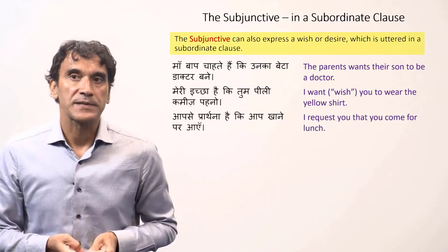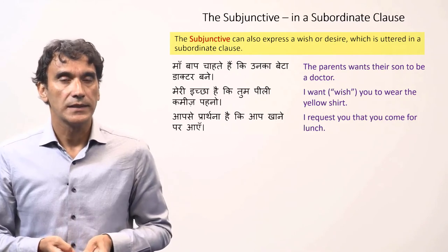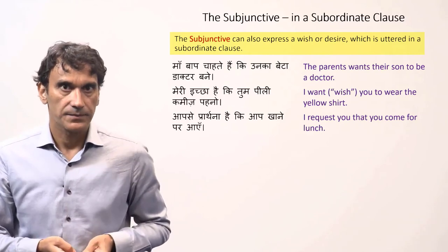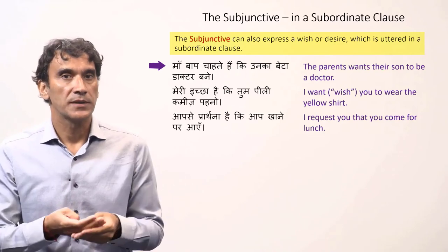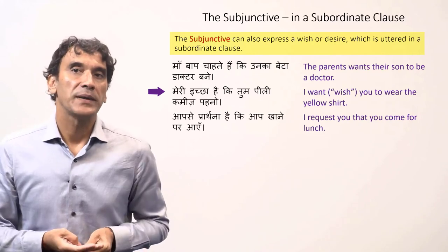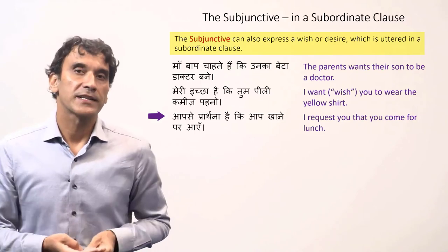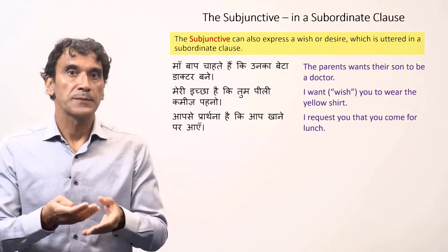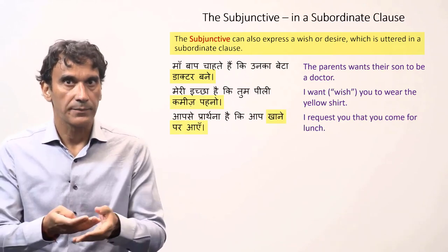The subjunctive can also express a wish or desire uttered in a subordinate clause. The subordinate clause is connected with the main clause using the conjunction ki, meaning that. For example: ma baap chahate hain ki unka beta doctor bane — the parents want their son to be a doctor. Meri ichha hai ki tum pili kamiz pehno — I wish you to wear the yellow shirt. Aap se prarthna hai ki aap khane par aayen — I request you to come for lunch. The subjunctive forms here appear in the subordinate clause: doctor bane, kamiz pehno, khane par aayen.